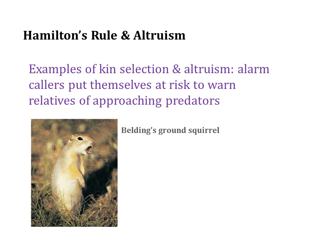Another example of kin selection in nature can be found in the Belding's ground squirrel. In this species, individuals give off alarm calls to warn relatives of approaching predators. Alarm calling behavior is altruistic because individuals giving off alarm calls are more likely to be taken by predators than individuals that aren't. Research has shown that individuals are more likely to engage in alarm calling behavior when they have close relatives in the near vicinity, supporting the idea that alarm calling boosts an individual's inclusive fitness.